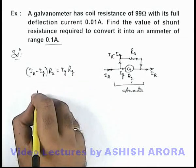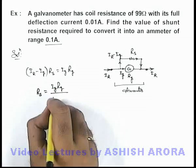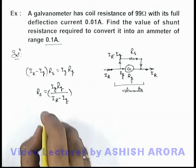So here the value of shunt resistance can be given as Ig Rg divided by Ir minus Ig. This is the expression which we already discussed in the previous sections.